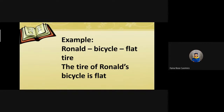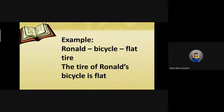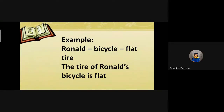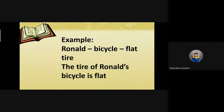I will group you into two groups. You will make a sentence using the words below to show possession. Write your sentence on the Manila paper, then after finishing your activity, you will need to report your answer. I will give you an example so that you have an idea of how to answer it. The example is: Ronald, bicycle, flat tire. The sentence using those words is: The tire of Ronald's bicycle is flat.